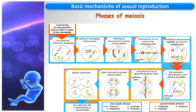Meiosis includes two successive divisions, each consisting of four phases. Before meiosis, the DNA is in a filamentous aspect. When meiosis starts, chromosomes condense, and each appears in the form of two chromatids attached by a centromere. This is the beginning of prophase I.